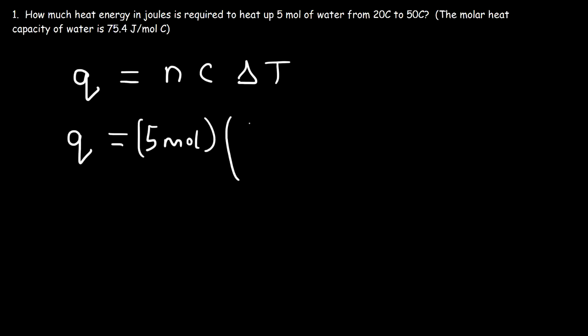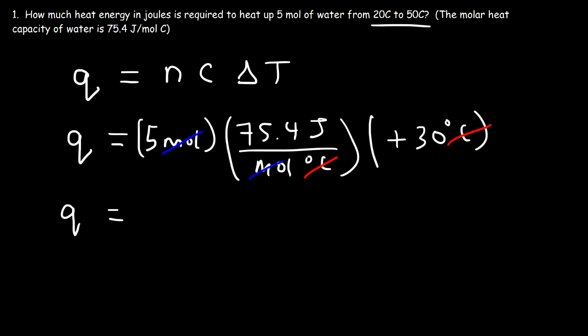The molar heat capacity is 75.4 joules per mole per degree Celsius. And the change in temperature, the final minus the initial, that's 50 minus 20, so we have a change of 30 degrees Celsius. If we take a look at the units, Celsius cancels and moles will cancel as well, so we get the heat energy in joules. It's 5 times 75.4 times 30, and so it's 11,310 joules.